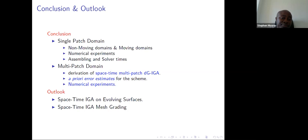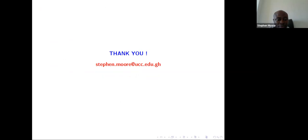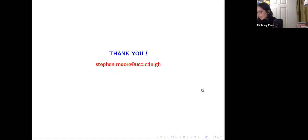In conclusion, I showed from a single patch how we extended to a multi-patch Spacetime DG IGA, proved a priori error estimates, and presented numerical examples. The outlook includes working on evolving surfaces and cases with singularities in time, space, or Spacetime. Thank you very much.